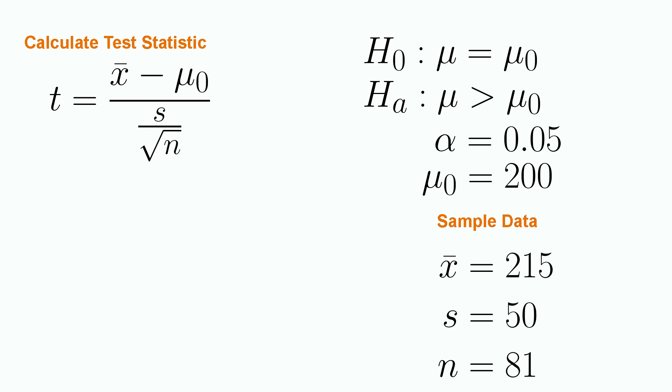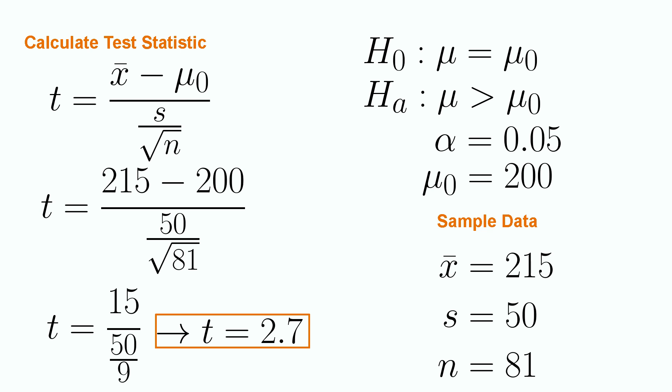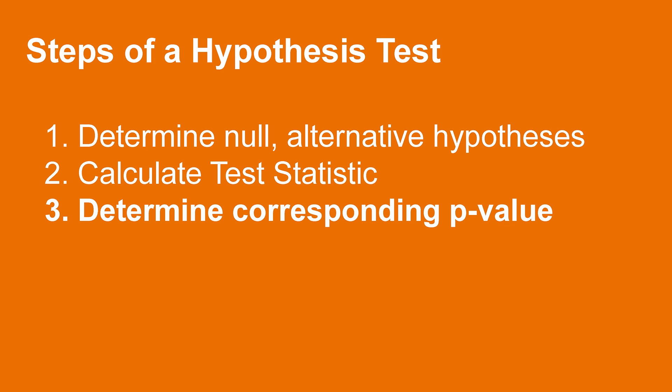Hopefully this has been a relatively simple calculation. Plugging in the relevant values, we have that t is equal to 215 minus 200 in the numerator. In the denominator, we have our standard error fraction with 50 divided by the square root of 81. This simplifies to 15 over the fraction 50 divided by 9, giving us a t statistic of 2.7.